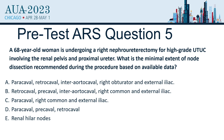Last pre-test question: a 68-year-old woman is undergoing right nephroureterectomy for high-grade upper tract disease involving the renal pelvis and proximal ureter. What is the minimal extent of node dissection? Should she have paracaval, retrocaval, and interaortocaval nodes? Should she also have right obturator and external iliac nodes — pelvic node dissection? Or retrocaval, precaval, interaortocaval, right common iliac, and external iliac? Or paracaval, right common iliac, and external iliac? Or paracaval, precaval, and retrocaval only — not including the common iliacs? Or renal hilar nodes only?